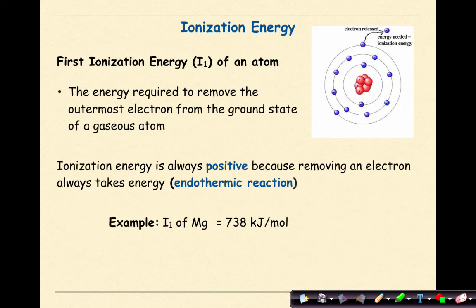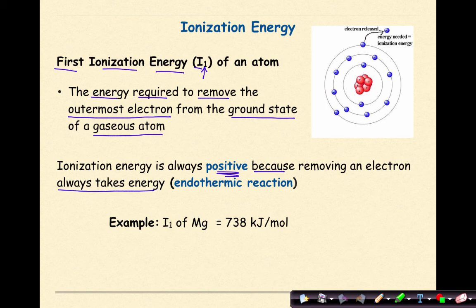Let's talk about ionization energy. The first ionization energy, which we represent as I with a little sub one of an atom, is defined as the energy required to remove the outermost electron from the ground state of a gaseous atom. Ionization energy is always positive because removing an electron always takes energy. This would be considered an endothermic reaction. You must put energy in to remove one of these electrons. For example, the first ionization energy for magnesium is 738 kilojoules per mole.